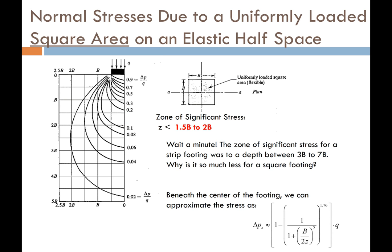Let's do a conceptual thinking minute. The zone of significant stress from lesson 13 on strip loads said that the zone of significant stress was anywhere between depths of three to seven times the footing width. But for the square load it is only one and a half to two times the footing width, even if the width itself is the same as the width of a strip footing. So what's the difference?